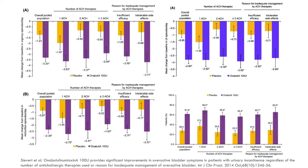The botulinum toxin groups showed quite a dramatic change compared to placebo in terms of the number of urgent incontinence episodes per day. It works well, but there are certainly some potential side effects to contend with. The results are at 12 weeks, showing the treatment has some lasting effects.